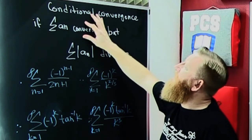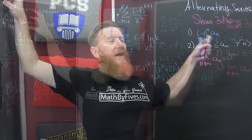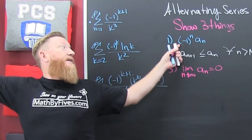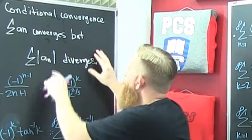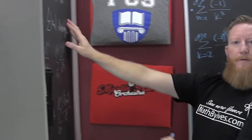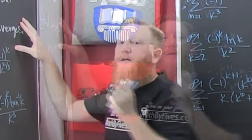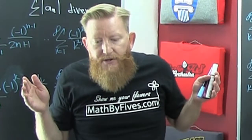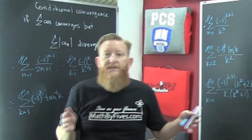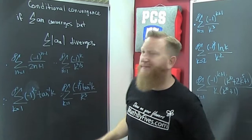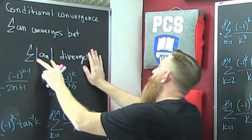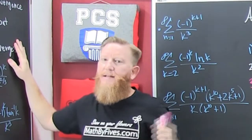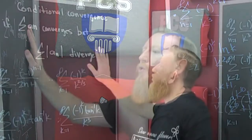Conditional convergence means it doesn't converge absolutely. In the last section they mentioned absolute convergence — that's when the series of absolute values converges, and that's a stronger convergence. There is a weaker convergence: conditional convergence. The conditional convergence says that the series converges as long as it's alternating — with that condition. But if you take the alternating part out, does it still converge? If it doesn't converge when you take the alternating part out, then it is conditionally convergent.